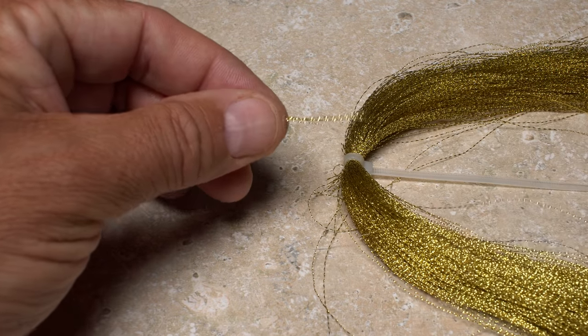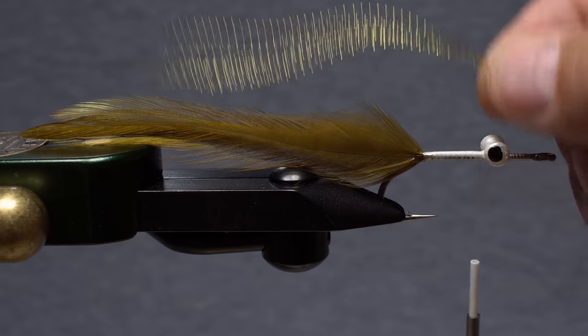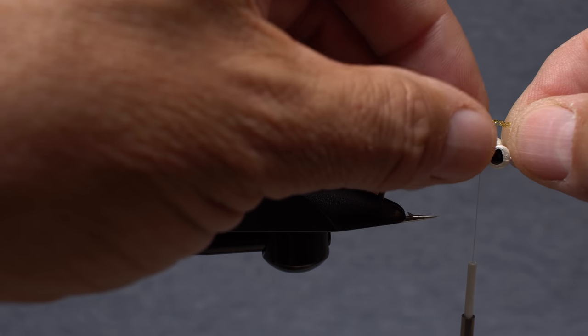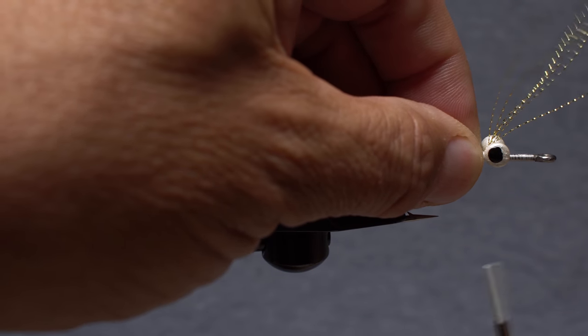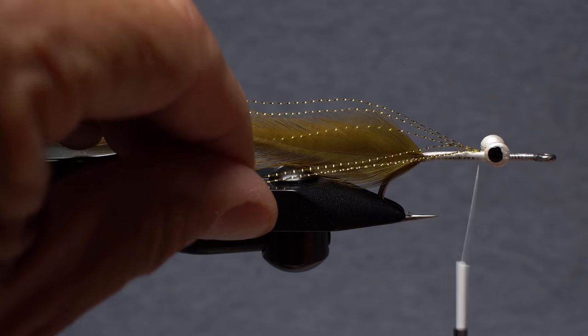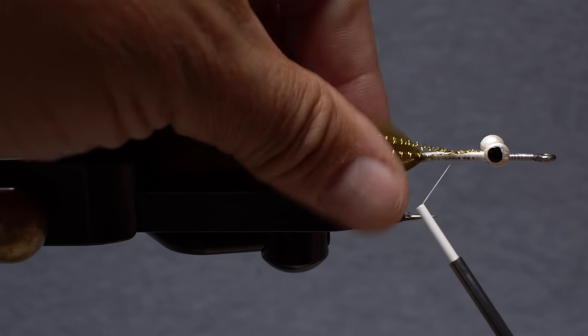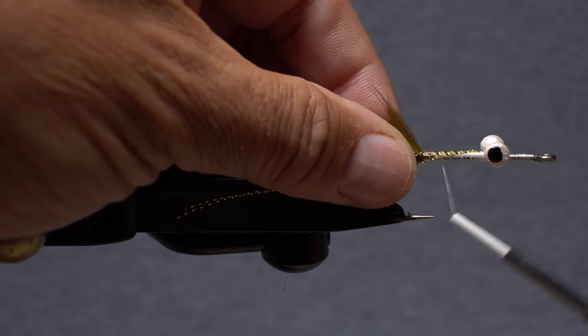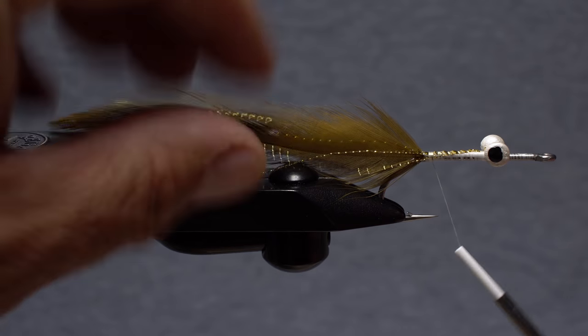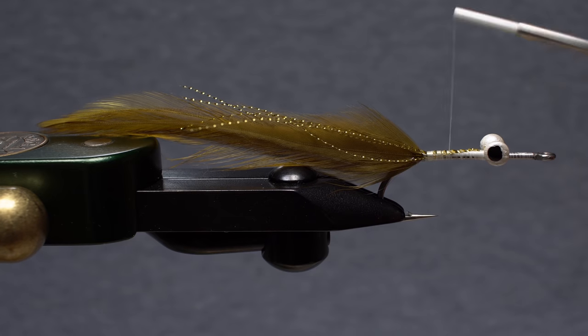Six to eight strands of gold crystal flash are used to add a little bit of shimmer and shine to the pattern. Measure so the strands extend about halfway down the saddle hackle tail. Bind the flash to the top of the hook shank behind the eyes and snip the excess off close. Holding three or four strands on the near side of the hook, start taking thread wraps to bind them down. Then push the remaining three or four strands over to the far side of the hook. Take thread wraps rearward all the way to the base of the tail. The idea is to have an equal number of strands on either side of the tail.